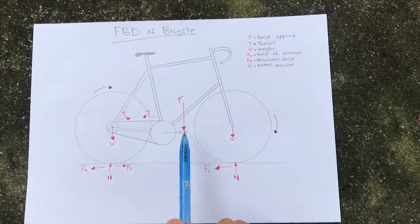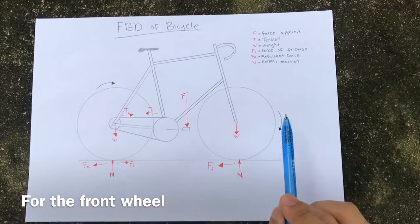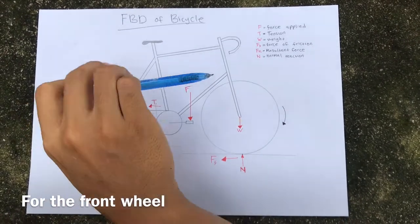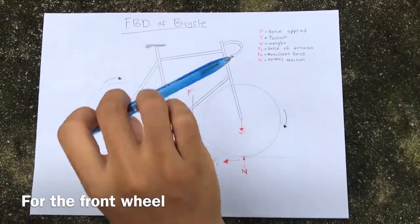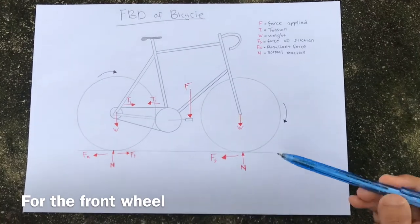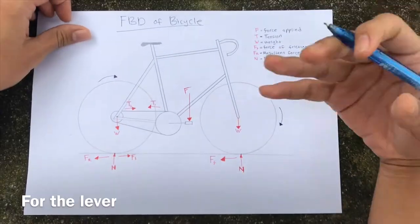As the bicycle moves forward, the motional force is directed forward and because of that, the frictional force is directed backwards. For the lever, force will be applied vertically on the pedal.